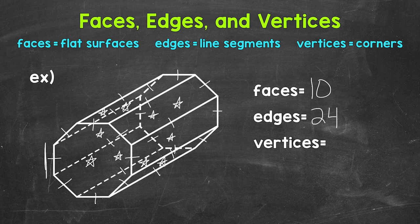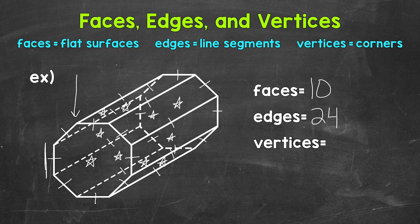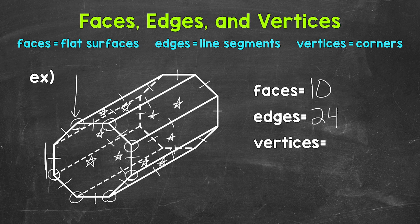And then lastly, let's identify and count the number of vertices. So the corners or points where three or more edges meet. For example, this is one of the vertices right here. So let's start here. So one, two, three, four, five, six, seven, eight.